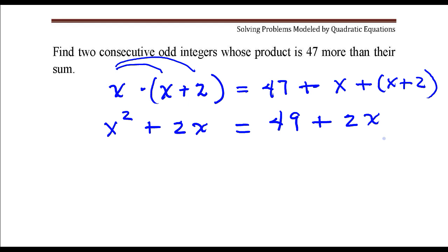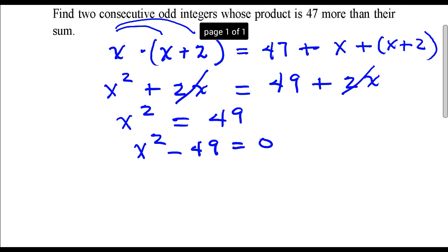If I subtract 2x from both sides, these will become zero. I'll be left with x squared is equal to 49. Subtract 49 from both sides gives me a binomial that is quadratic.